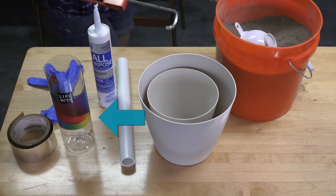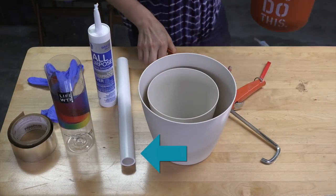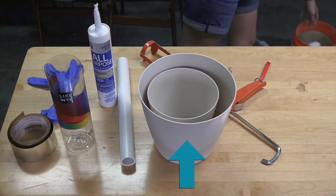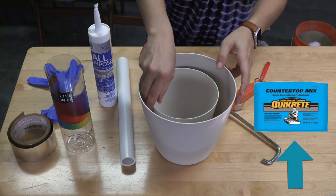We're going to use a 1 liter life water bottle, a 1 inch PVC pipe and cap, two flower pots, 8 inch and 6 inch, and we're using Kwikrete countertop mix.